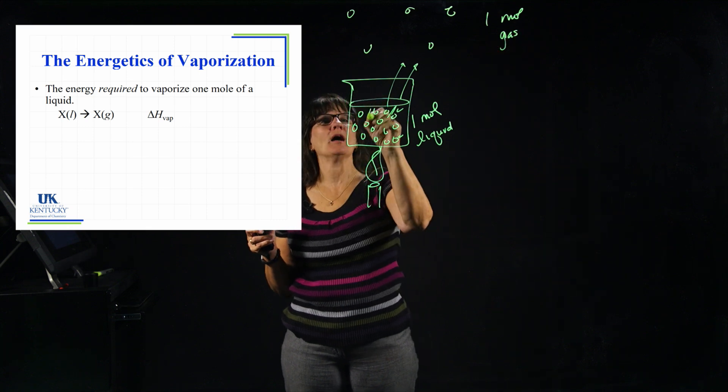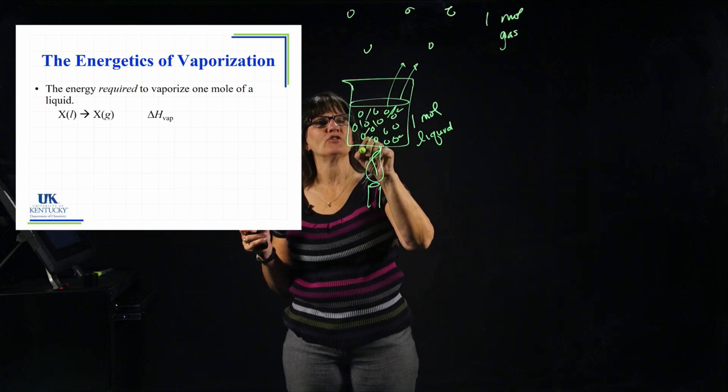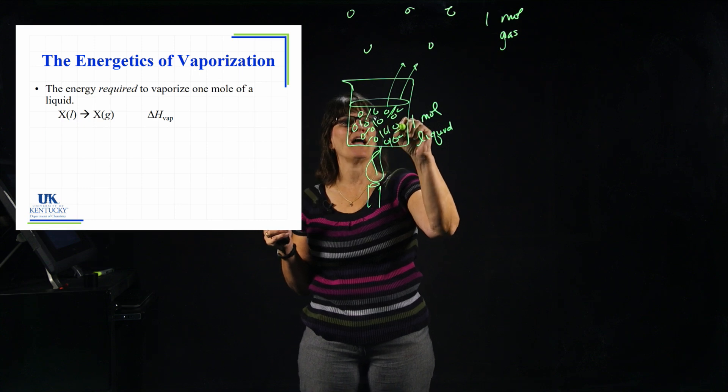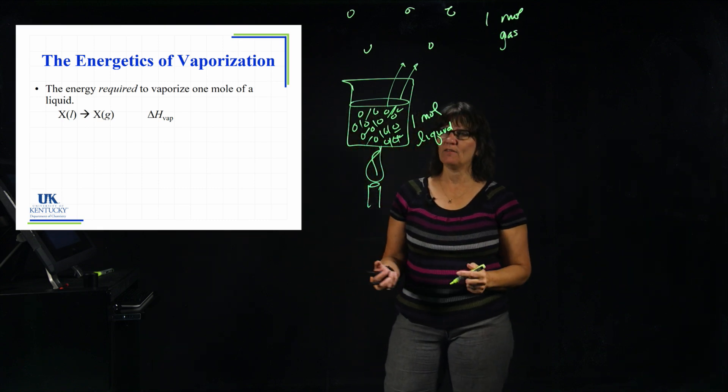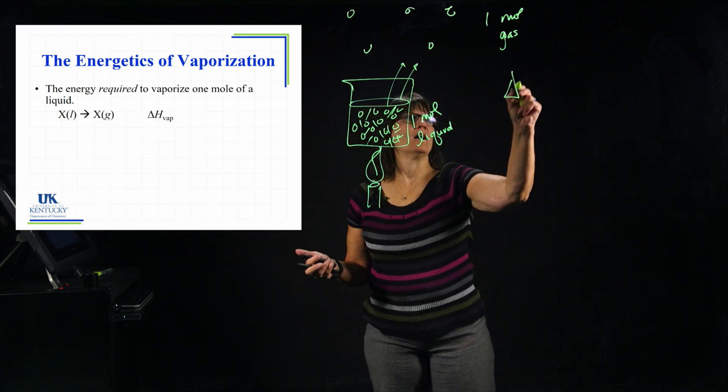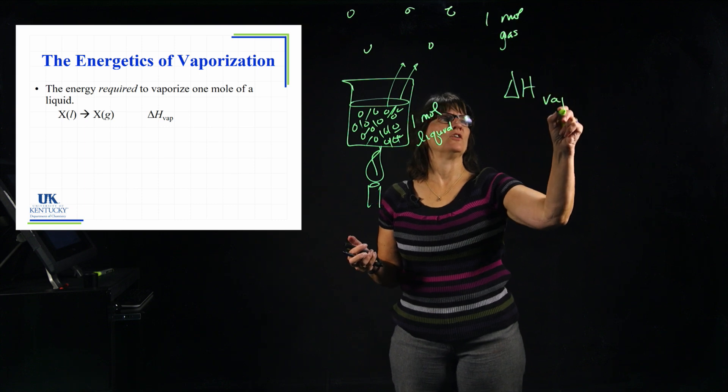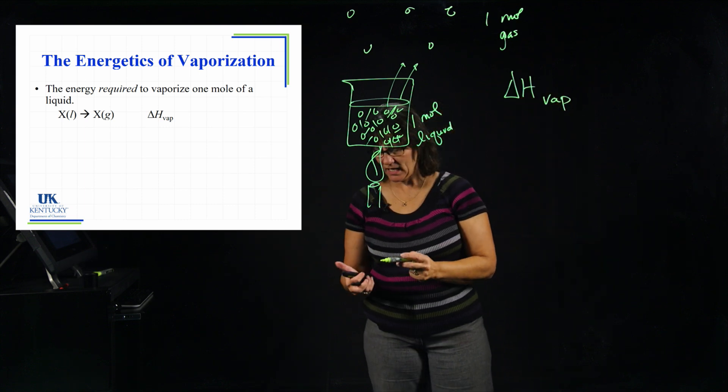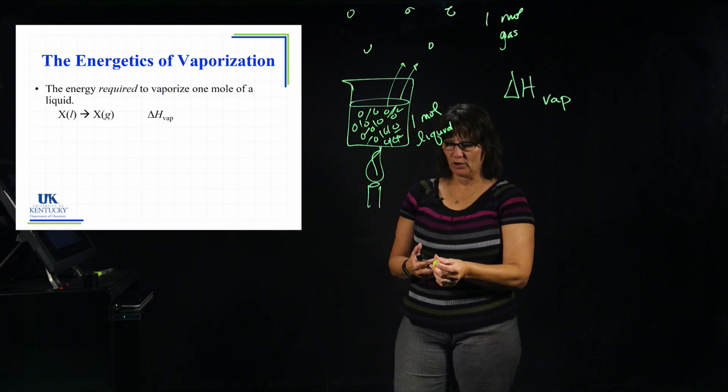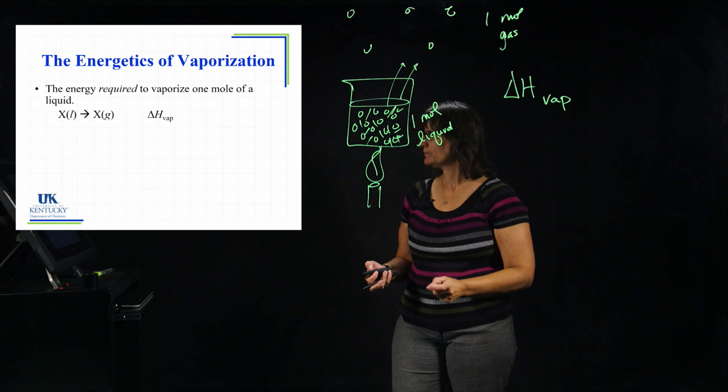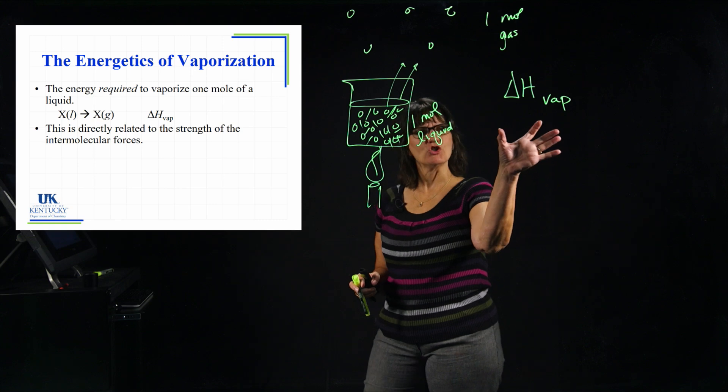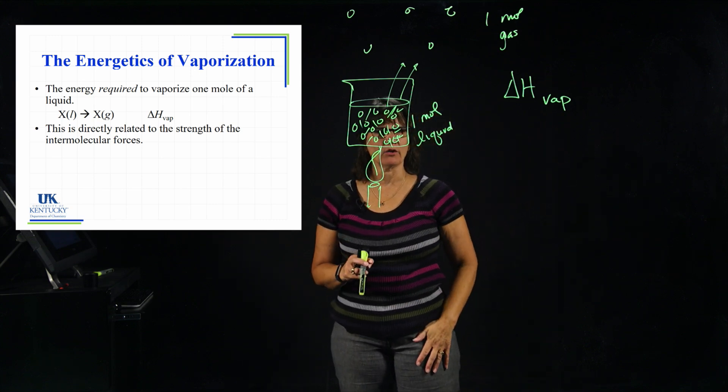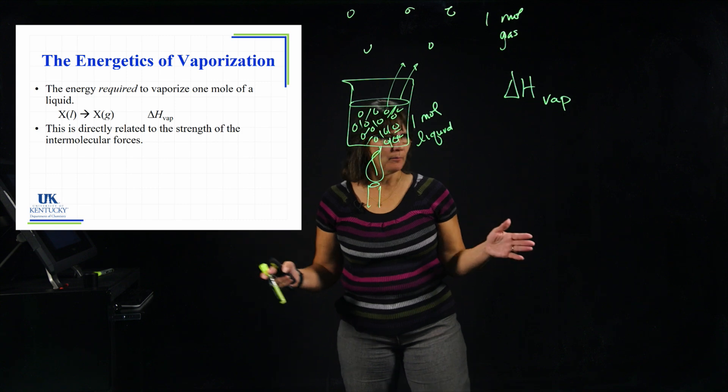To do that, I have to break all of these attractions. Every one of them is going to have to be broken. And there's an amount of energy associated with that that we give the symbol delta H of vaporization. You'll hear it called delta H vap. Heat of vaporization is the other way you will hear it referred to.